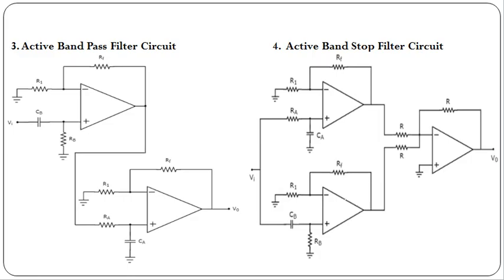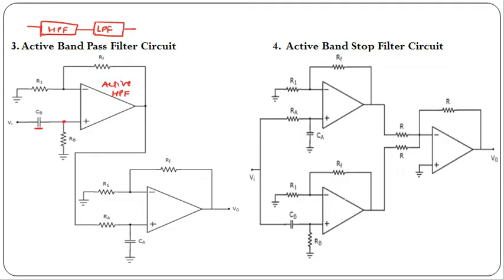The active band pass filter is a cascade of an active high pass filter and an active low pass filter. First we have an active high pass filter — identified by a capacitor in series followed by a shunt resistor with input at the non-inverting terminal. Its output becomes the input for the active low pass filter — identified by a series resistor with a shunt capacitor. Together these two cascaded circuits behave as an active band pass filter.